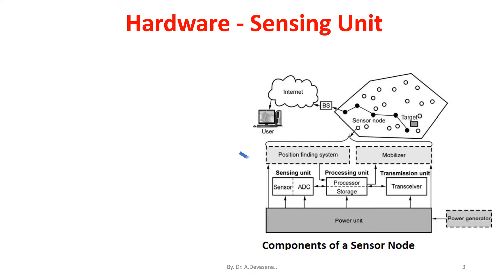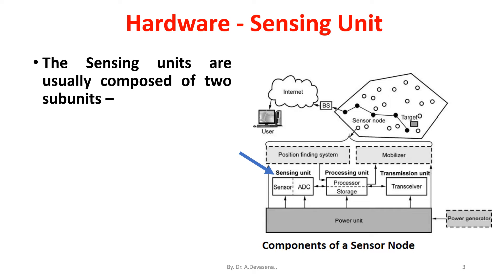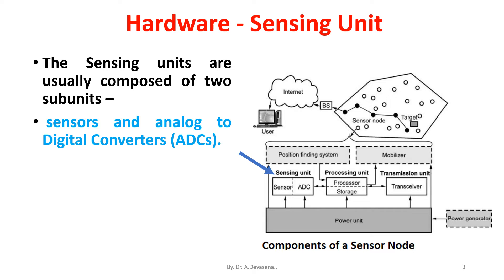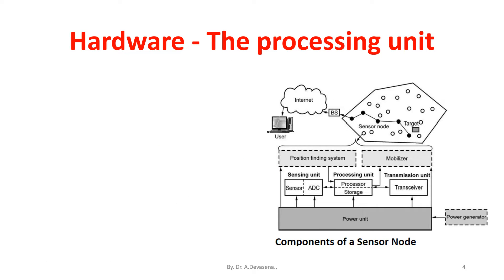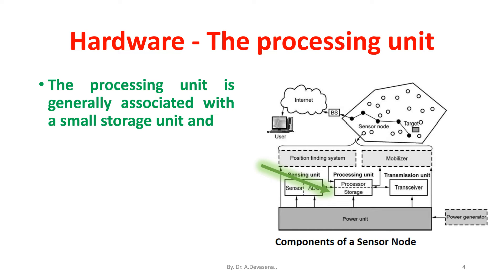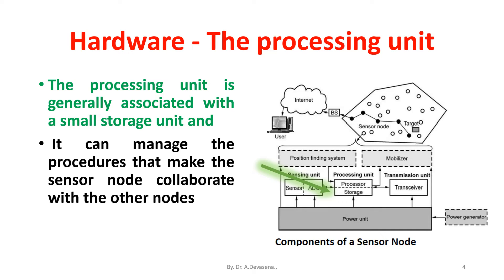Sensing unit. The sensing units are usually composed of two subunits: sensors and analog to digital converters, that is ADC. The analog signals produced by the sensors are converted to digital signals by the ADC and then fed into the processing unit. The processing unit is generally associated with a small storage unit, and it can manage the procedures that make the sensor node collaborate with other nodes to carry out the assigned sensing tasks.